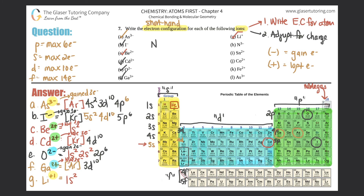H: N³⁻. Nitrogen is over here, pretty close to the top, so do the whole configuration. Start with hydrogen: 1s2, then 2s2, then 2p — need three boxes to get to nitrogen, so 2p3. Negative 3 tells me I gain 3 electrons. P's max is 6 electrons; there are 3 here, I need to gain 3, so 3 plus 3 is 6. Erase the 3 and make it 6.